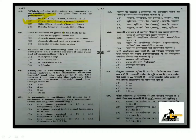Next question: The function of gills in fish. Gills are the breathing organ of a fish. So the correct answer is: absorb dissolved oxygen from water. That is option 3.